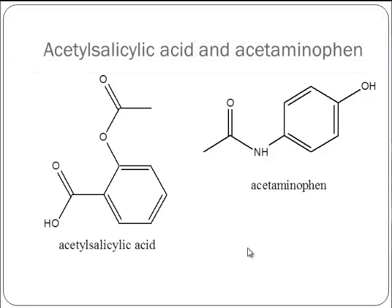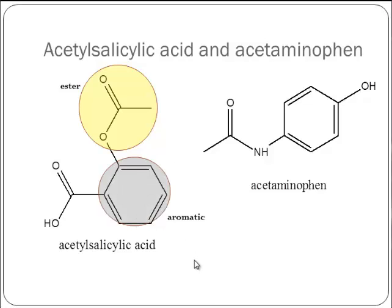Let's look for the groups in aspirin, focusing on heteroatoms and unusual bonding. C double bond O with carbons on one side and an oxygen on the other — no H present, so it's not a carboxylic acid. C double bond O, O, C — that makes it an ester. We've also got an aromatic ring. And here's our carboxylic acid: C double bond O, single bond O, H. So aspirin has an ester, an aromatic, and a carboxylic acid — all three regions are very important in getting this molecule to interact with the enzyme that shuts down prostaglandin production causing inflammatory pain.